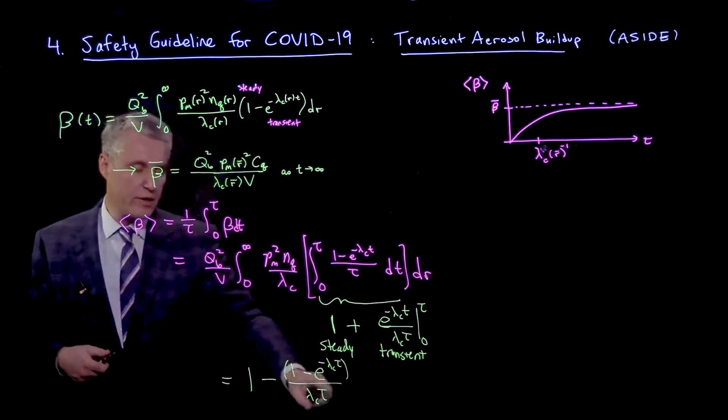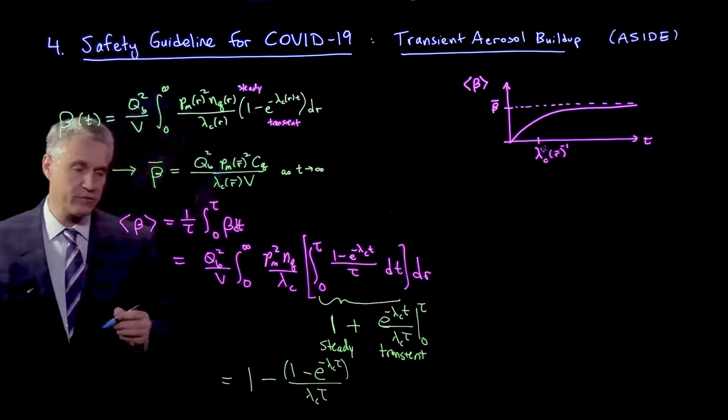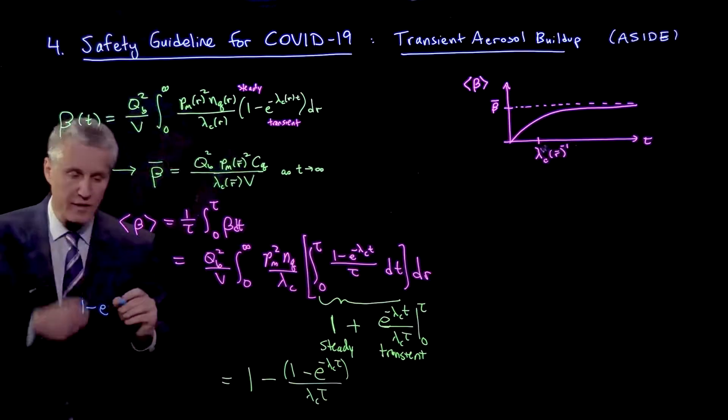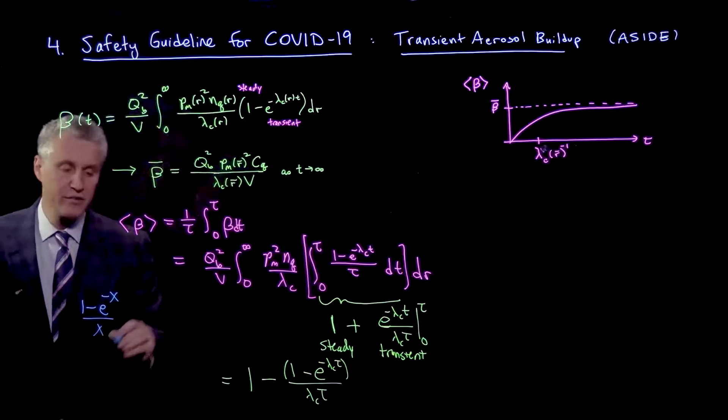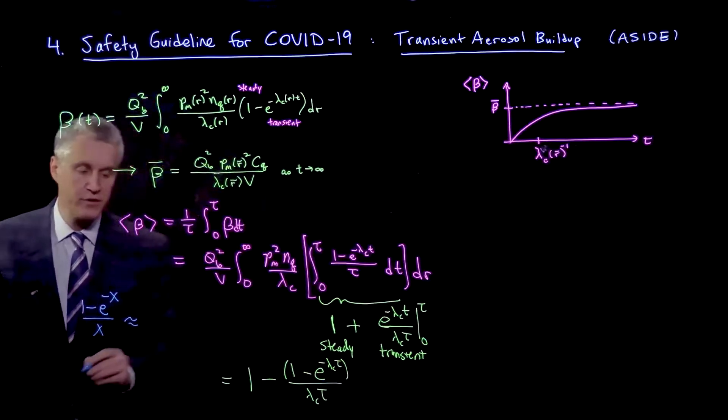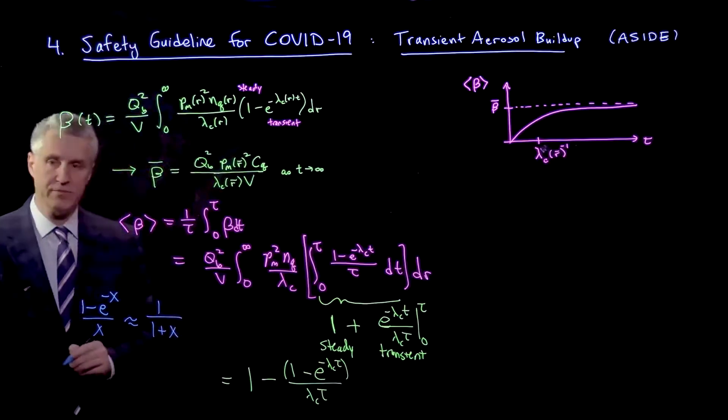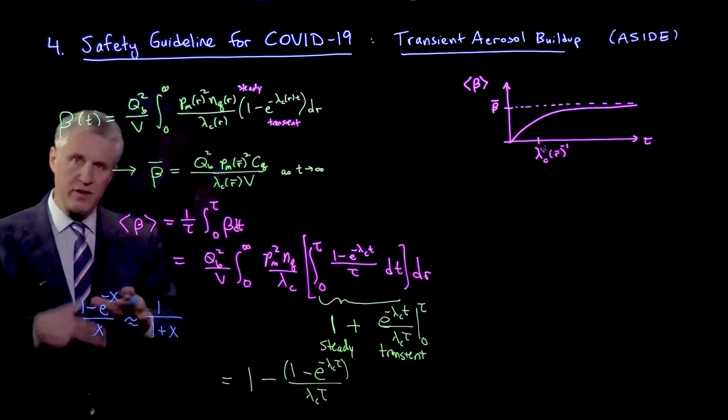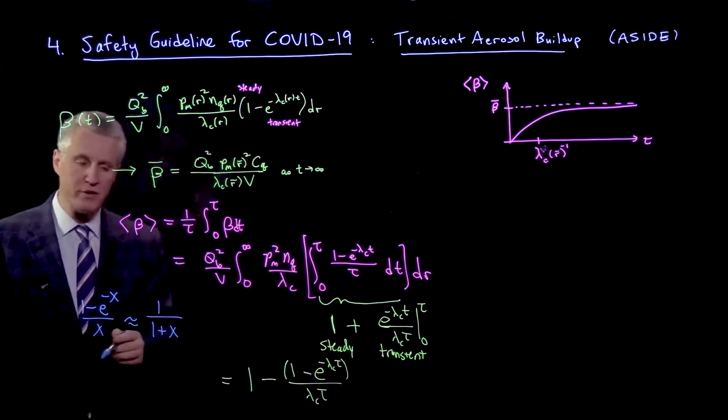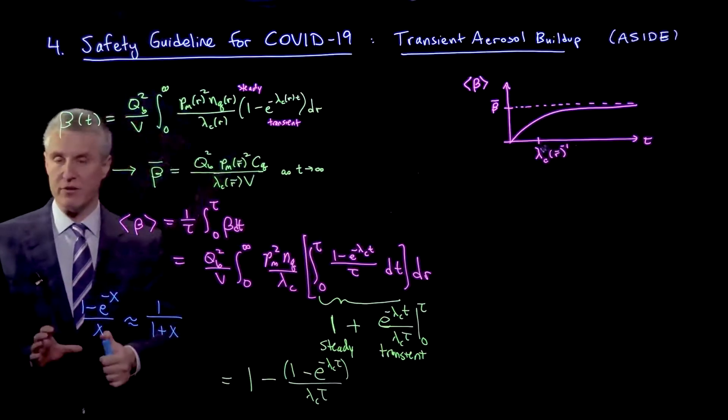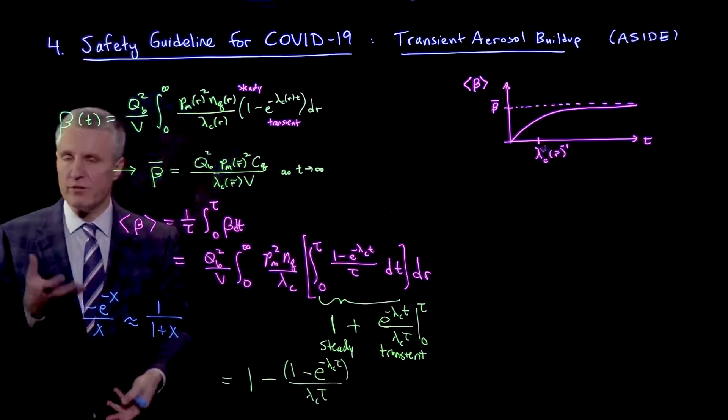And so there's a nice approximation I can make, which is that 1 minus e to the minus x over x is not too far off from 1 over 1 plus x, it turns out. So it's not a perfect match. You can try plotting these two functions. But it's a reasonable approximation.